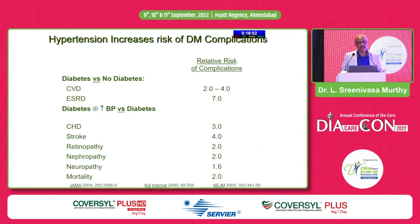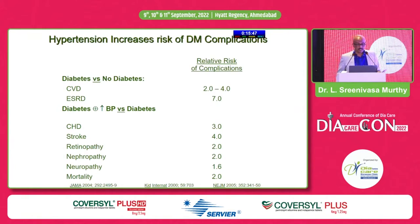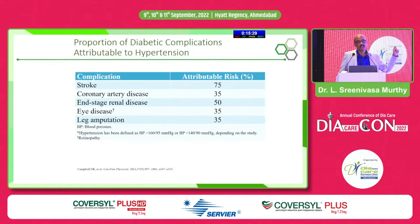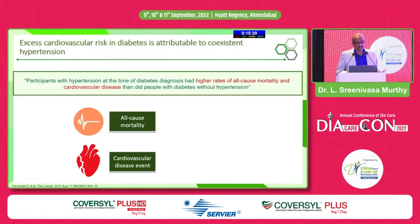Hypertension increases the risk of diabetes complications. Look at the relative risk: diabetes versus no diabetes is important, but diabetes plus BP versus diabetes alone shows a relative risk increase for CHD, stroke, retinopathy, and all other complications. The proportion of diabetic complications attributable to hypertension: stroke is 75%, CAD 35%, end-stage renal disease 50%, eye diseases and leg amputation 35% each.